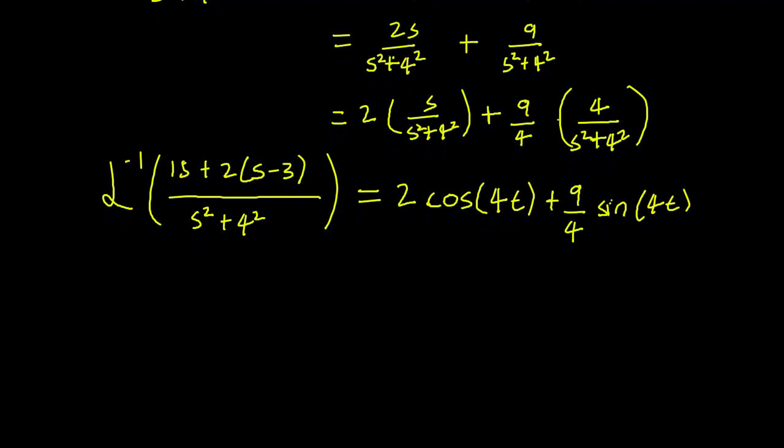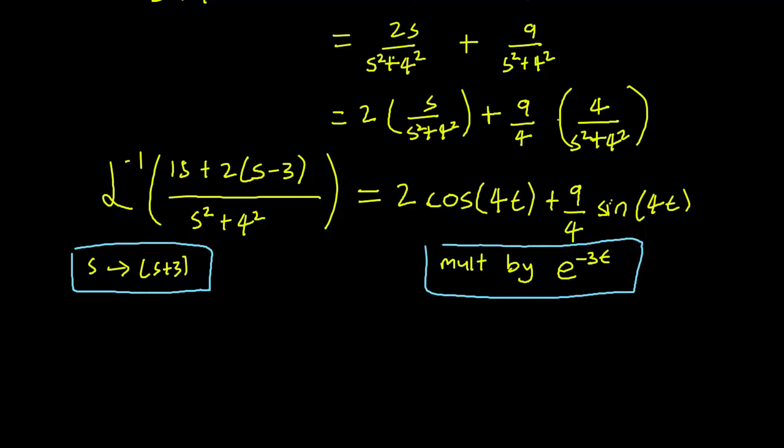So to go from s to s plus 3, we need to use the formula for s translation. So shifting from s to s plus 3 here is the same as multiplying by e to the minus 3t here in this world. So remember that we had that correspondence between shifting from s and multiplying by exponential functions.